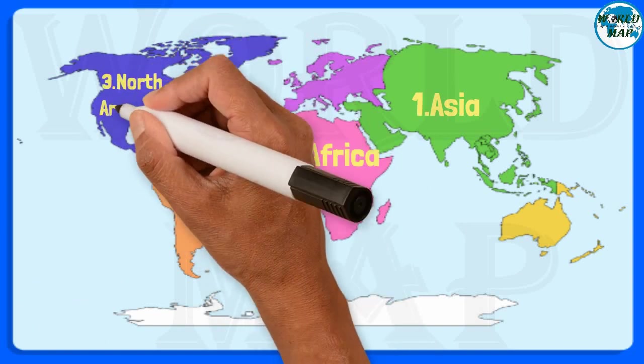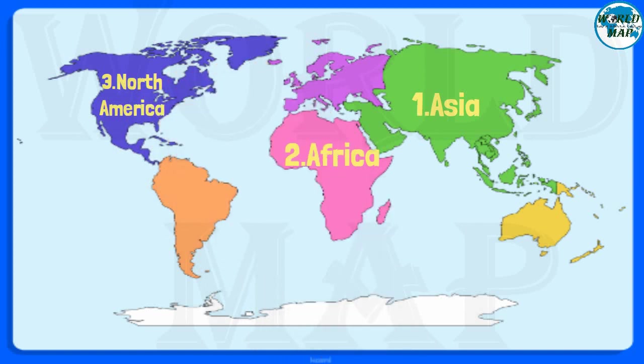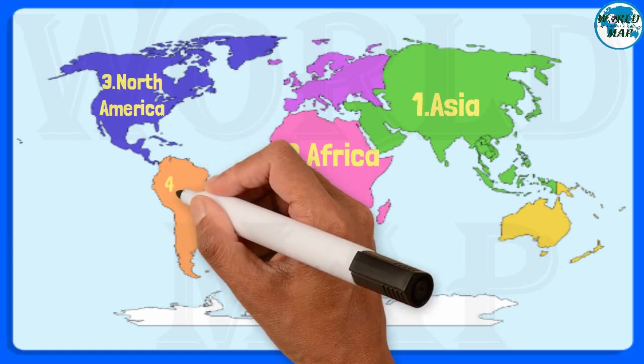Number 3. North America. It is the third largest continent on Earth in terms of area and fourth largest in terms of population. It comprises 23 nations and is entirely located in the Northern Hemisphere.